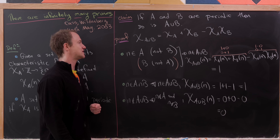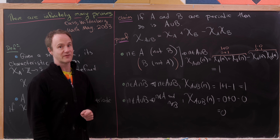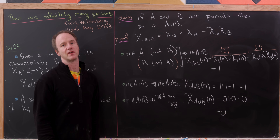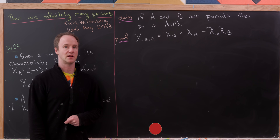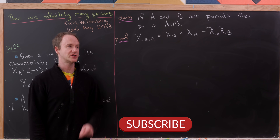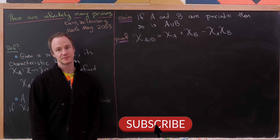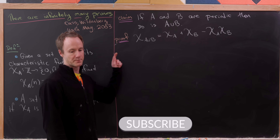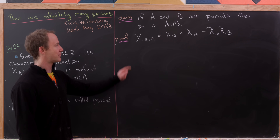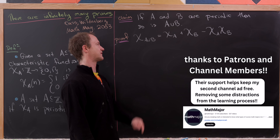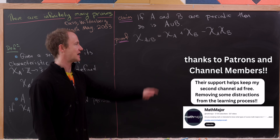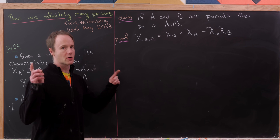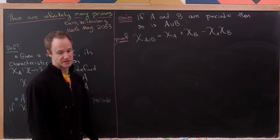Now let's use this formula to show that the union has a periodic characteristic function. We proved that chi(A ∪ B) can be expressed in terms of the component characteristic functions chi_A and chi_B. Now we want to show that this union characteristic function is indeed periodic.